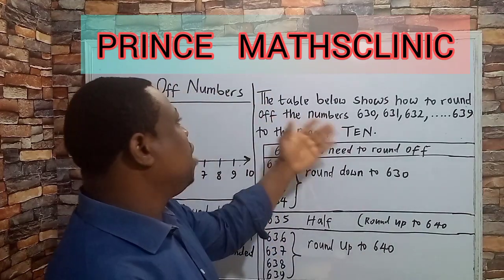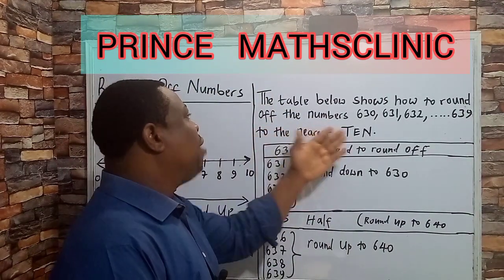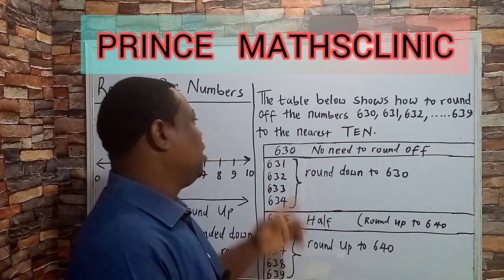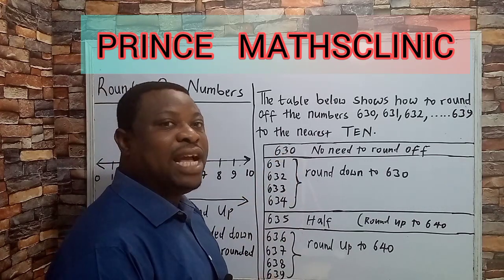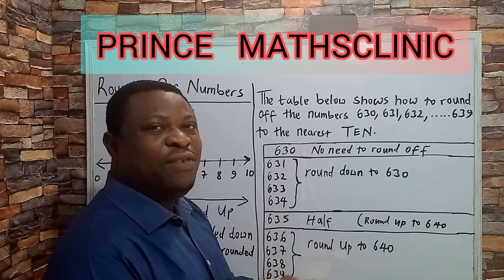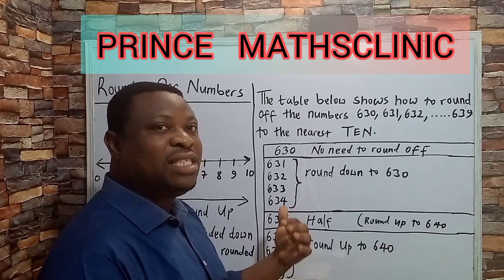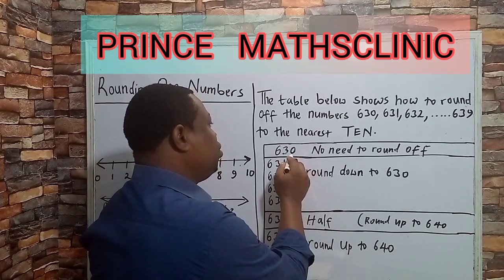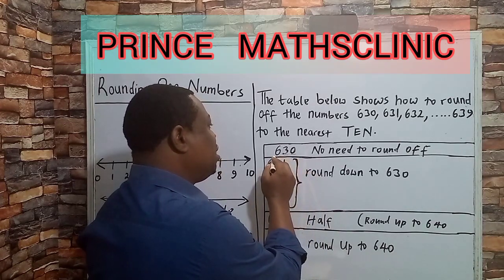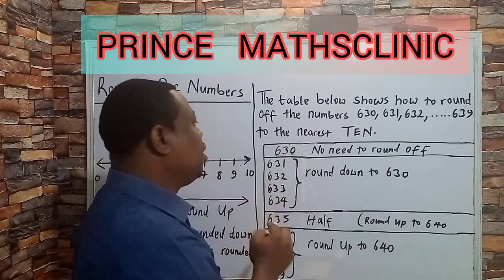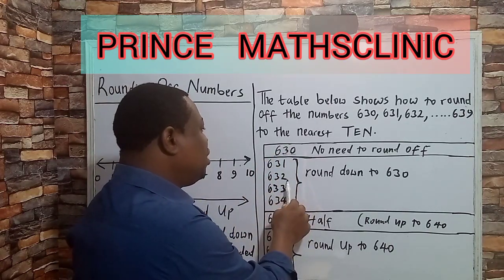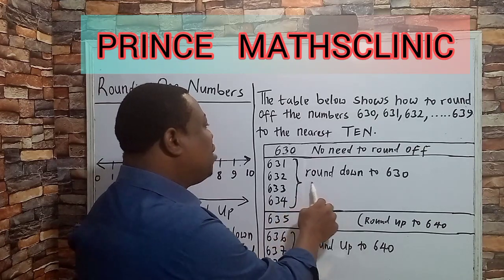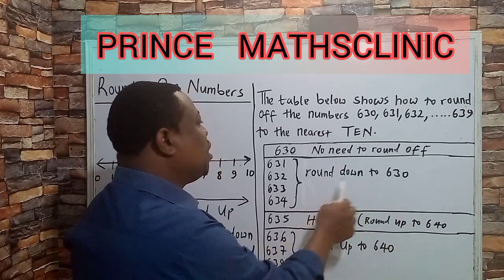Here you have a table that shows how to round the numbers 630 to 639 to the nearest 10. The number 630 does not need any rounding because it is already to the nearest 10. The first place is units, then tens, then hundreds. Numbers like 631, 632, 633, and 634 should be rounded down towards 630.